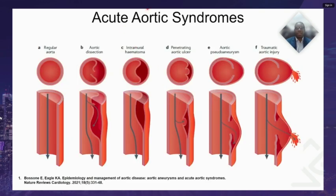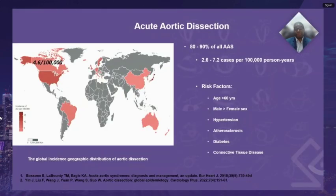Acute aortic syndromes refer to life-threatening conditions with a common pathophysiologic pathway, which is disruption of the intima and media of the aortic wall. They include aortic dissections, intramural hematomas, penetrating aortic ulcers, aortic pseudoaneurysms, and even traumatic aortic injury. Acute aortic dissections account for about 80% to 90% of all acute aortic syndromes.